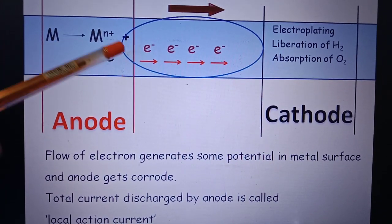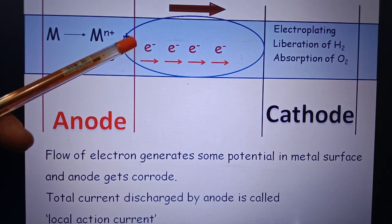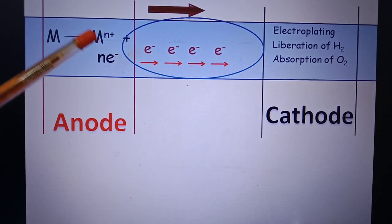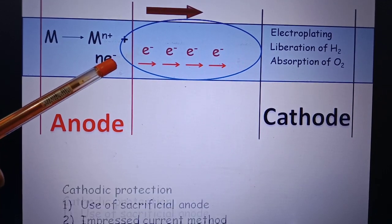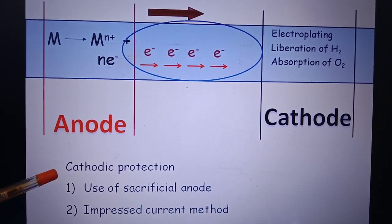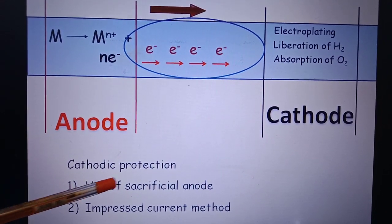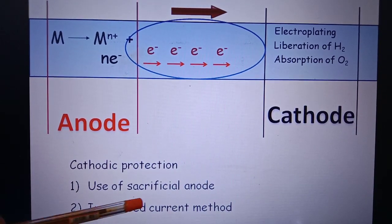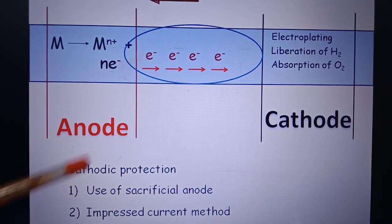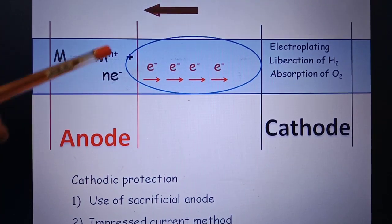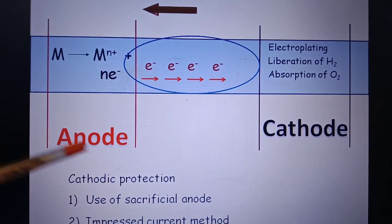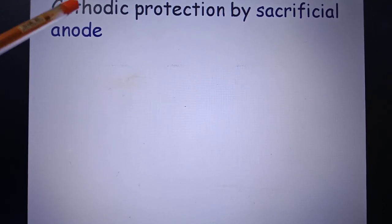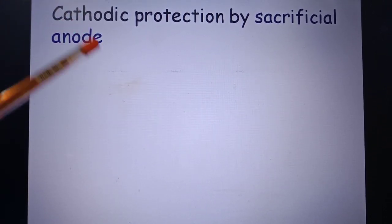If we stop this flow of electrons we can protect the metal from corrosion. This protection is called cathodic protection. There are two methods to protect it. The first method is use of sacrificial anode and the second method is called the impressed current method. In both methods we reverse the direction of current to protect the metal from corrosion.